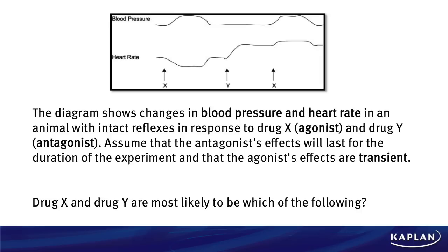So what happens when we give X? Blood pressure goes up. And what happens to heart rate? It goes down. Then blood pressure normalizes, heart rate normalizes. Then we give drug Y, and drug Y does nothing to blood pressure but it increases heart rate. And then finally, with Y always there, X is given again. Blood pressure goes up, but look what's different here — in the presence of Y, the heart rate goes up as well. It doesn't go down. That's the critical analysis you must do prior to looking at those answer choices.